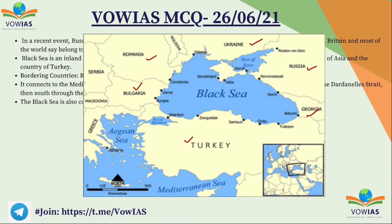Some additional information: the Black Sea is connected to the Sea of Azov by the Strait of Kerch. The Black Sea is also connected to the Mediterranean Sea via the Bosphorus Strait. These are important geographical facts related to the Black Sea.